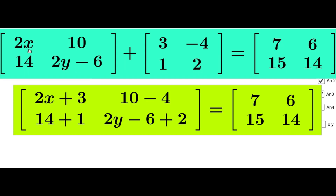Adding these two matrices by adding corresponding terms: 2x+3, 10+(-4) which is 10-4, 14+1, and 2y-6+2, equal to matrix [7, 6; 15, 14].